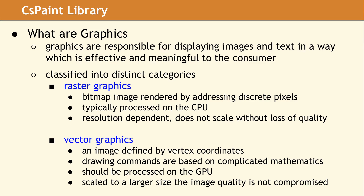Raster graphics uses a bitmap image, which is most often processed on the CPU. Since a raster image is a fixed-size bitmap, it cannot be scaled up or down without tremendous loss of quality, and this can also take a good deal of memory.